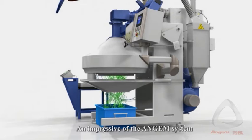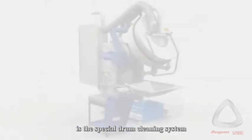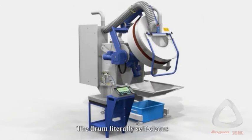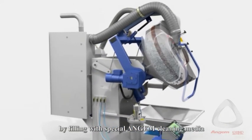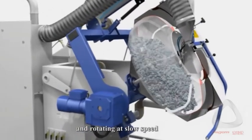An impressive feature of the Rotomat system is the special drum cleaning system. The drum literally self-cleans by filling with special Truval cleaning media and rotating at slow speed.